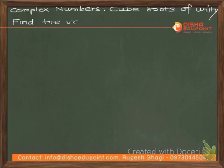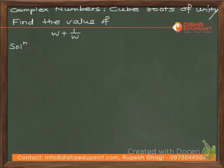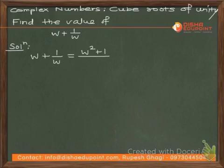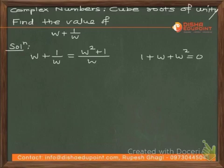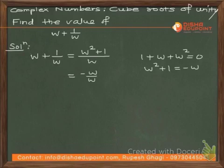Find the value of ω + 1/ω. Cross-multiplying gives (ω² + 1)/ω. Since 1 + ω + ω² = 0, we have ω² + 1 = -ω. Therefore (ω² + 1)/ω = -ω/ω = -1.